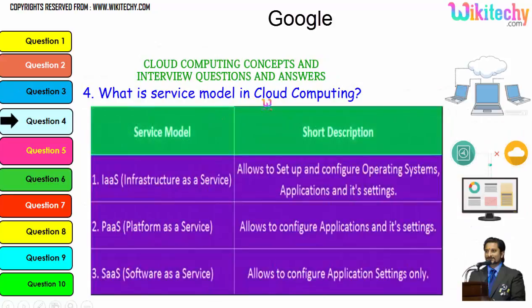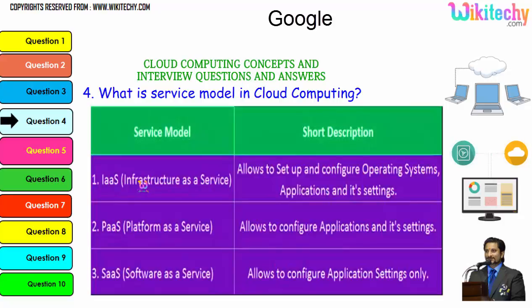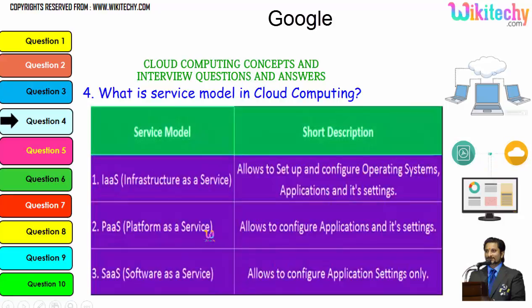Now, what is the service model in cloud computing? There are three major service models. The first is Infrastructure as a Service, where you are allowed to set up and configure the operating system, applications, and settings — you are given a server and can install whatever you want. Platform as a Service allocates a specified operating system and you can put any applications. Software as a Service provides you with software where you can configure whatever application settings you need.